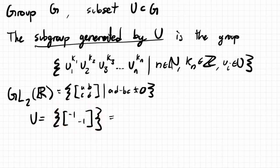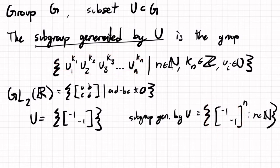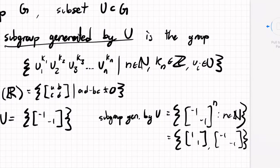The subgroup generated by U is the set of all possible powers. Since there's just one element, we don't need to worry about multiplication order. But notice this matrix squared is just the identity matrix. So it's just the identity and this matrix—a group with two elements.